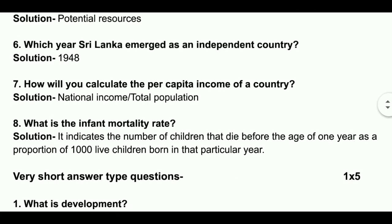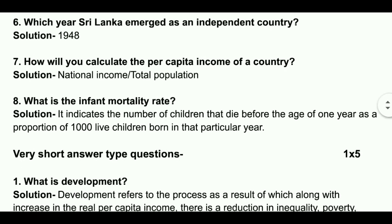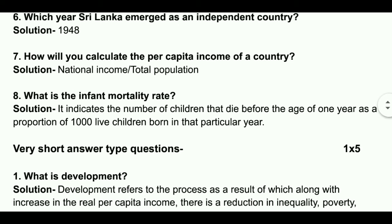Question number seven. How will you calculate the per capita income of a country? Solution: National income total divided by total population.